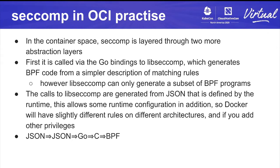In the OCI hierarchy — Kubernetes, then CRI, then runtimes — it's a complicated setup because there are a bunch of abstraction layers. Effectively everything is just passed all the way down to runc, which calls the Go binding to libseccomp. That's a simplified version of what the actual Seccomp BPF looks like, and these simplified calls are generated from a JSON config. It's this weird process of converting JSON to JSON to Go to C to BPF to run in the kernel — it's a bit messy.